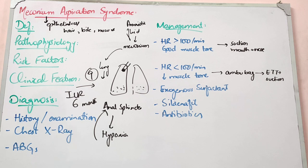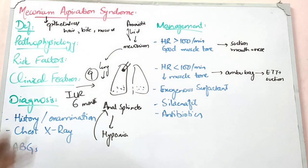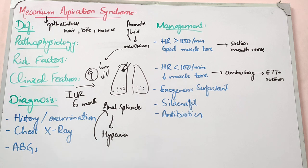Normally, during labor and delivery, if the child has asphyxia, oxygen in the blood decreases, leading to hypoxia. Hypoxia causes the child to pass meconium. During contractions, the child tries to take gasping breaths. When the child is delivered, gasping causes aspiration of meconium. This is the mechanism of meconium aspiration syndrome.